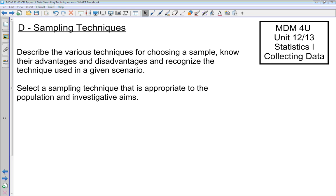We're continuing our discussion about collecting data, and in this lesson we want to take a look at sampling techniques. By the end of this lesson you should be able to describe the various techniques for choosing a sample, know their advantages and disadvantages, and recognize the technique that has been used in a given scenario. The big thing is to select a sampling technique that is appropriate to the population you're trying to study and the goals of your investigation or survey.